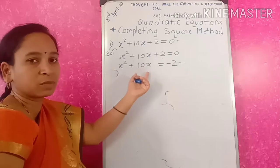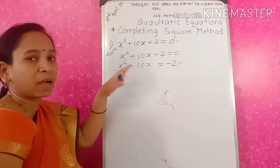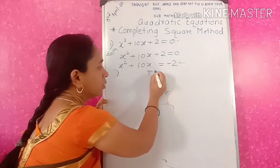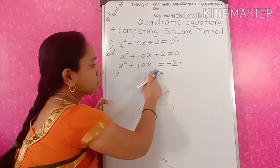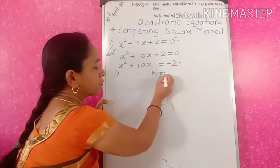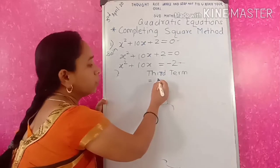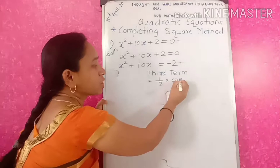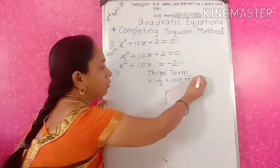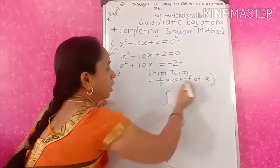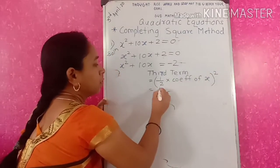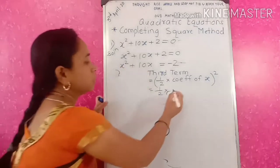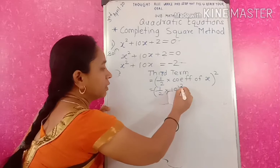We are going to convert this binomial into the square of a binomial. Here only 2 terms are there, so to convert this into the square of a binomial we need a third term. To find that third term, there is a formula: one-half multiplied by the coefficient of x, and that quantity squared. So half multiplied by 10, bracket squared.